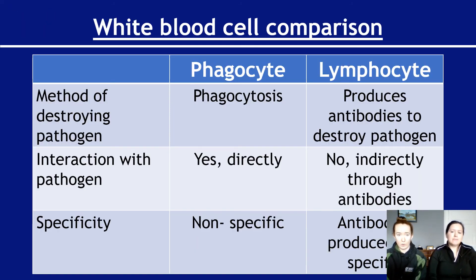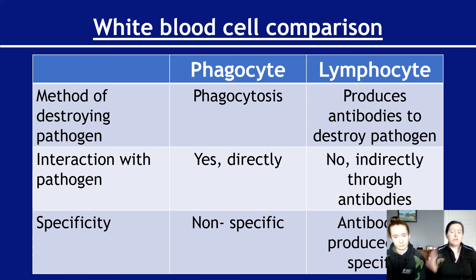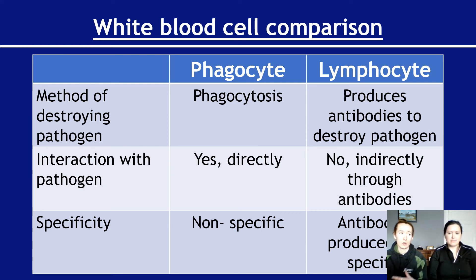Just to compare the different white blood cells: in terms of the method of destruction, phagocytes use phagocytosis - they directly engulf and digest the pathogen. Whereas lymphocytes produce antibodies and send the antibodies to destroy the pathogen instead of doing it themselves. In terms of interaction, phagocytes will directly involve themselves with the threat. Whereas lymphocytes will observe and then produce antibodies. In terms of specificity, phagocytes are not specific - if they see a pathogen, they will go and engulf it. Whereas lymphocytes have to be specific because the antibodies they produce are specific. The antibodies for a common cold will not affect chickenpox - so lymphocytes are specific to certain pathogens.